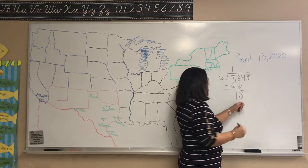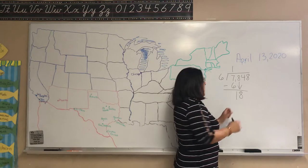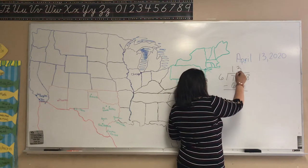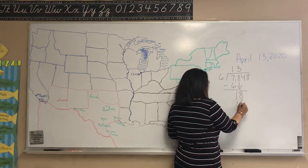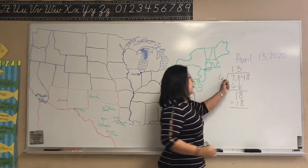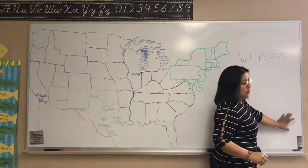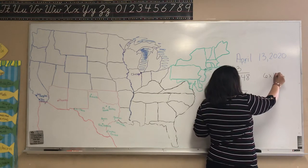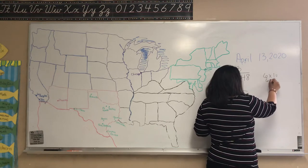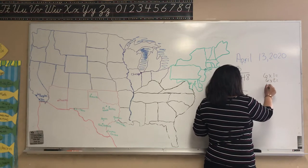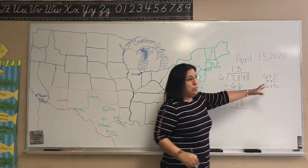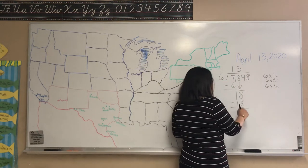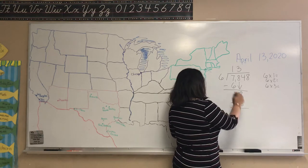Some of y'all did not remember to do that. Bring down your arrow, and it's going to be 18. So six will go into 18 three times — three times six is 18. If you don't remember what number to put up here, I've taught y'all to write it on the side. Write something like: six times one, six times two, six times three, and so on. Do your multiples of six until you remember what number will go into it. Six times three is 18.